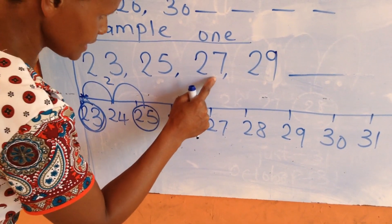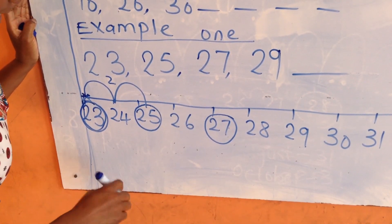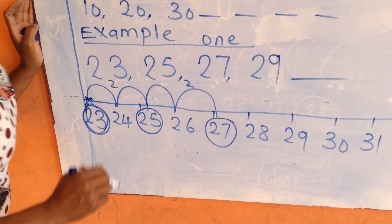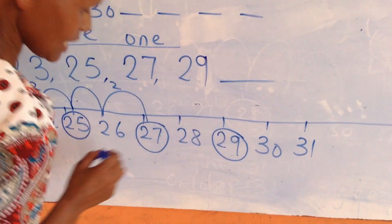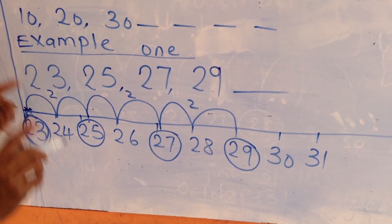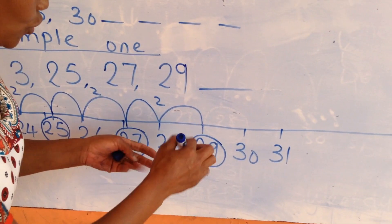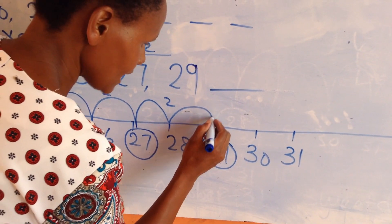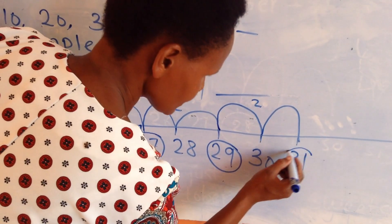The next number is 27. I'll go to my number line and circle number 27. Let's see the steps: 1, 2. I've made two steps. Since we have been making two steps to get the next number, we are going to move two steps forward to get the next number. Let's make the steps: 1, 2. Two steps, and our answer is 31.